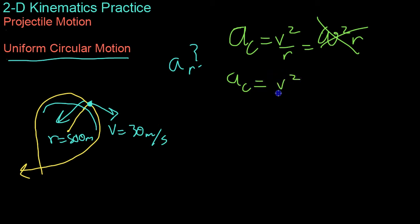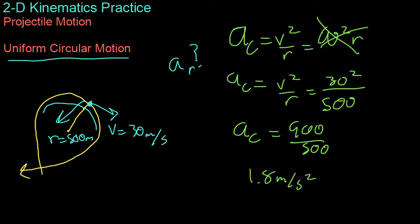Now, we know that it's v squared over r. In this case, we have our velocity, which is 30 squared over the radius. It's acting as a 500 meter radius circle. So, your total centripetal acceleration is 900 over 500, or 1.8 meters per second squared.